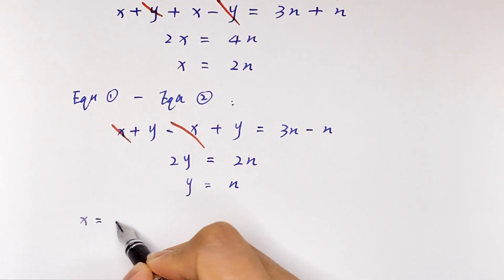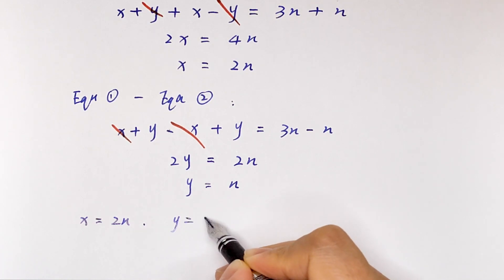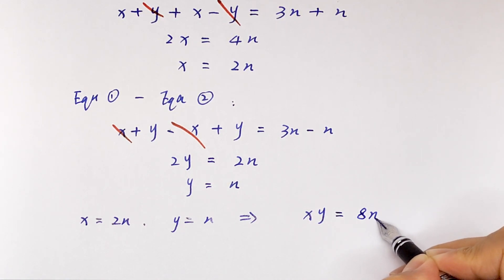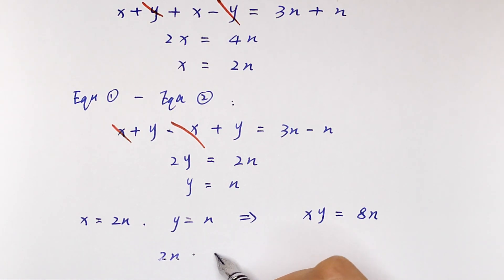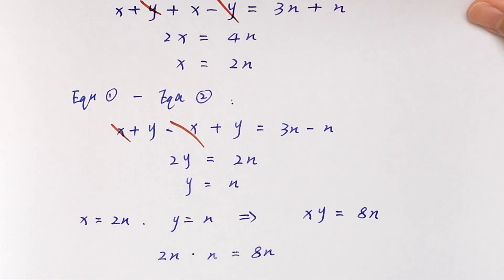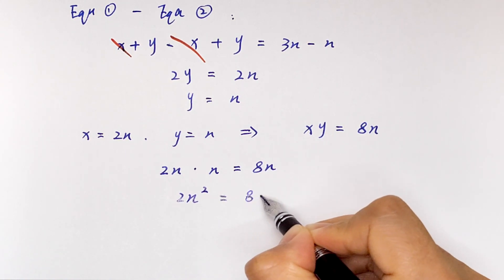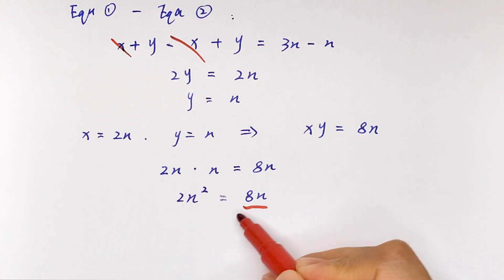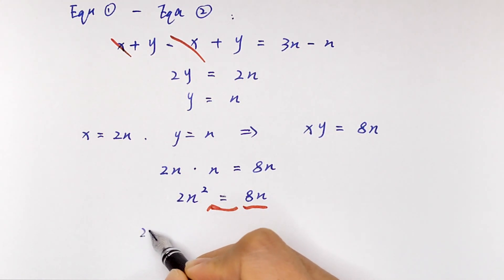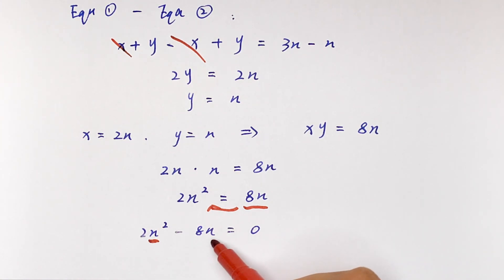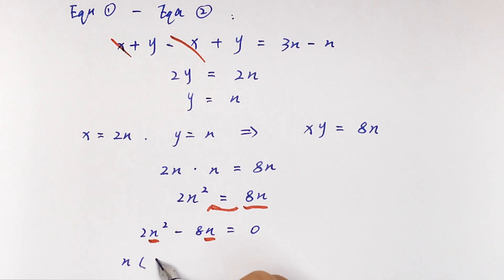Now because we know x is equal to 2n and y is equal to n, xy is equal to 8n, so 2n squared is equal to 8n. Taking everything to the left side: 2n squared minus 8n is equal to 0. Here n is common, so we take n out of the bracket: n times (2n minus 8) is equal to 0.